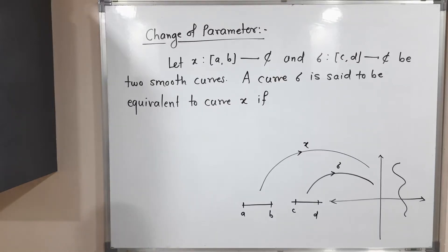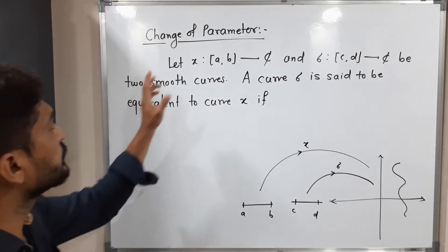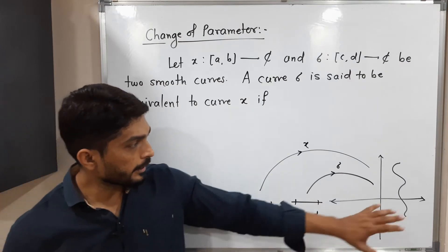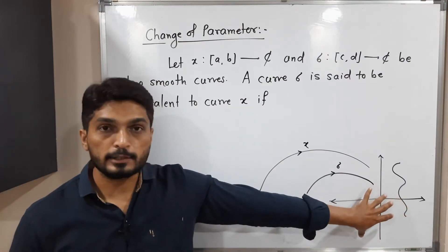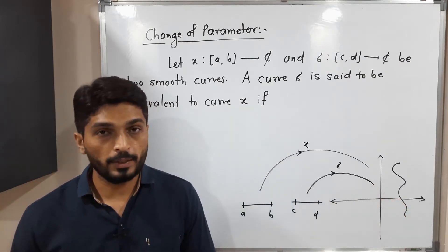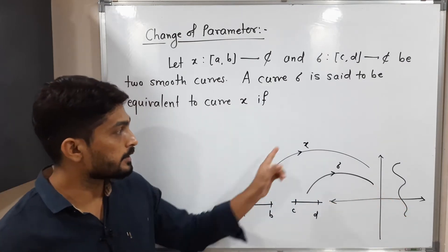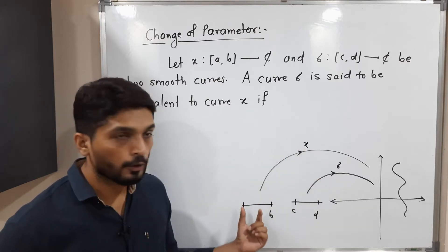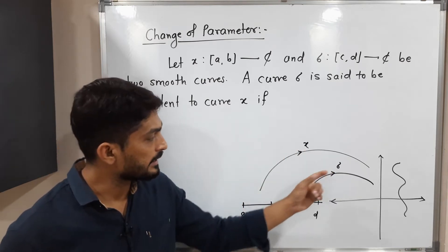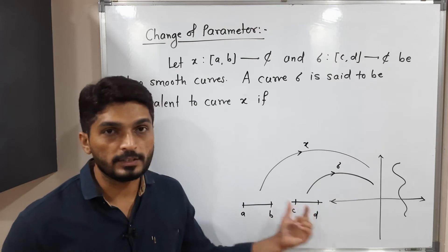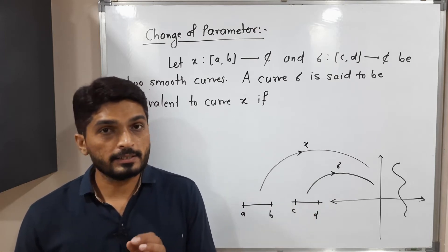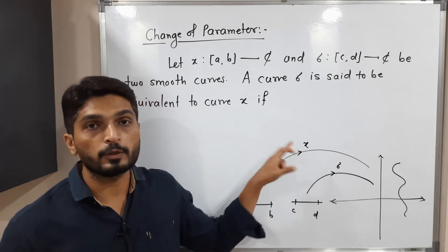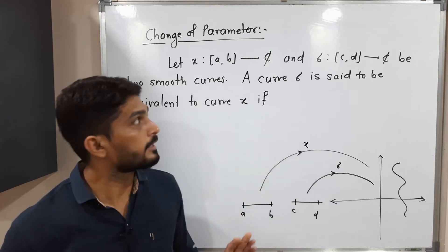Let us discuss the concept of change of parameter. Consider a complex plane where we have two curves χ and σ. χ is defined on the closed interval [a, b] and σ is defined on the closed interval [c, d].